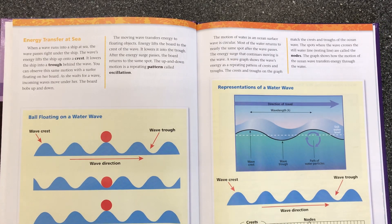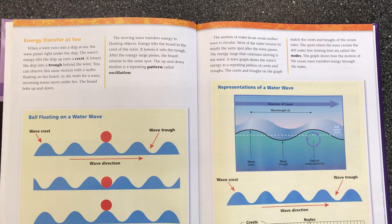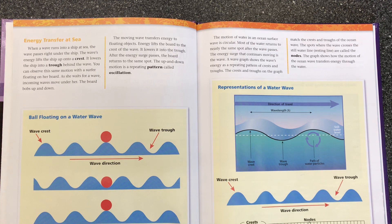Energy transfer at sea: when a wave reaches a ship at sea, the wave passes right under the ship. The wave's energy lifts the ship up onto a crest, then lowers the ship into a trough behind the wave. You can observe this same motion with a surfer floating on her board. As she waits for a wave, incoming waves move under her and the board bobs up and down. The moving wave transfers energy to floating objects — energy lifts the board to the crest of the wave and lowers it into the trough. After the energy surge passes, the board returns to the same spot. This up and down motion is a repeating pattern called oscillation.